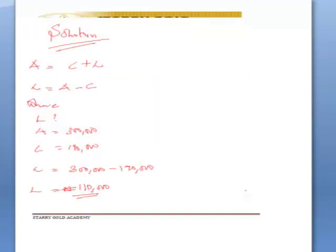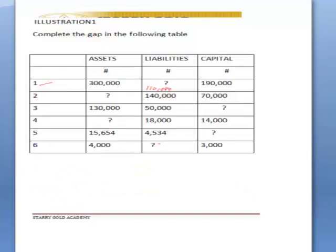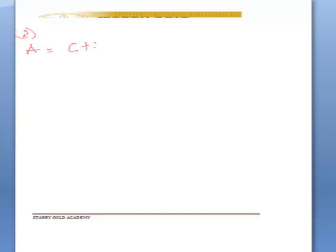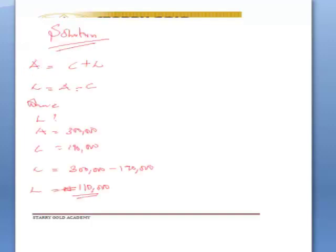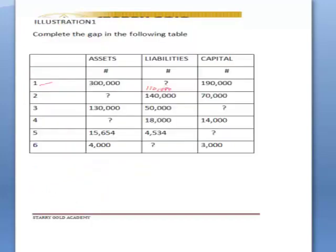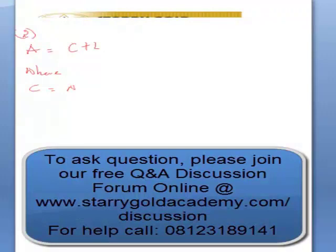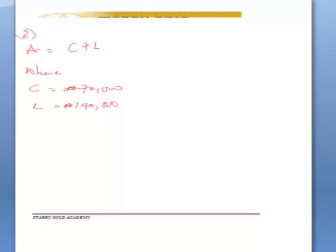Question number two: we are looking for A. So solution two — looking for A. Therefore A equals capital plus liability. C is seventy thousand and L is one hundred and forty thousand. So A equals seventy thousand plus one hundred and forty thousand.